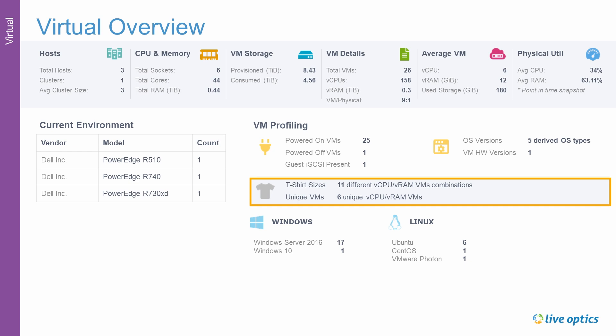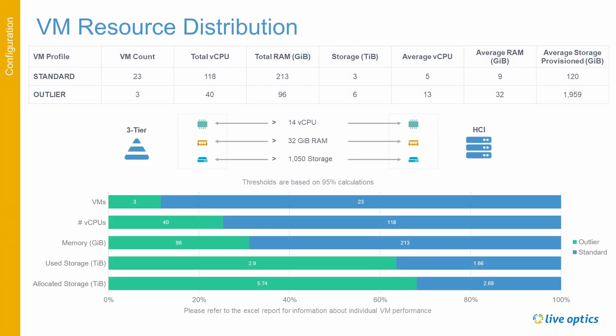These 6 unique combinations could be the VM configurations of the outlier VMs, as you'll see in the next slide. Here we have the VM resource distribution. This slide illustrates how many virtual machines and their resources are considered outliers — those virtual machines whose resource threshold is above the 95th percentile. In other words, these VMs have a significantly different configuration compared to everything else.